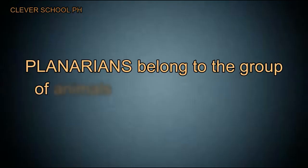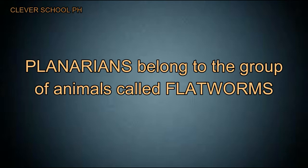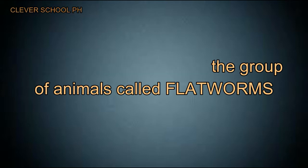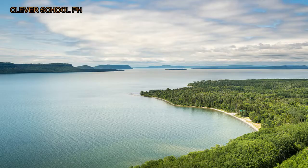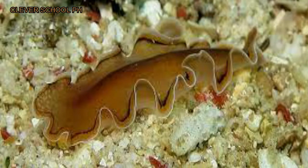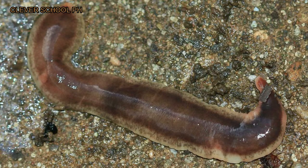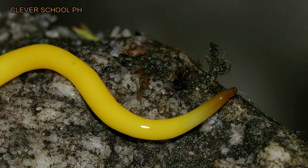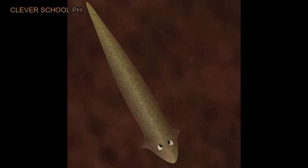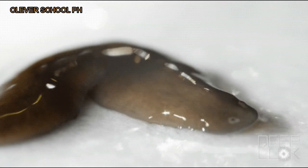Planarians belong to the group of animals called flatworms. They live in streams, lakes, seawater, or damp soil. They may have green, yellow, or black stripes, or are plain grey, brown, or black in color.